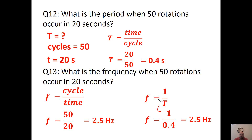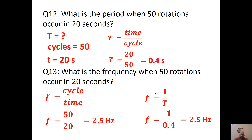Often you'll just be given the period, or you have to recognize that one cycle happens in a certain time. That's the difference between time and period. If someone was running for 20 seconds, that's just little t. But if a person completes one rotation around a track in 20 seconds, that's capital T — period. It's an important distinction when reading a question.